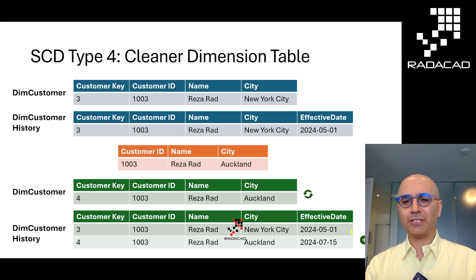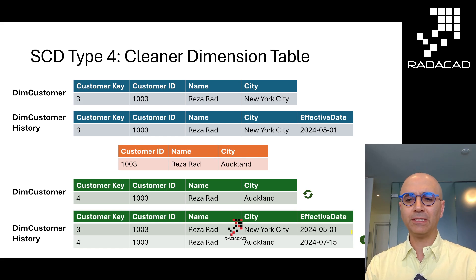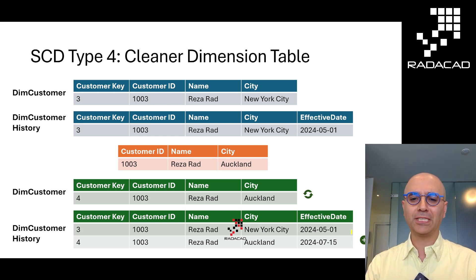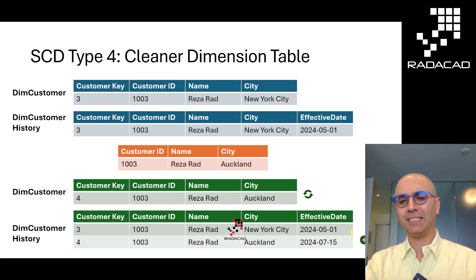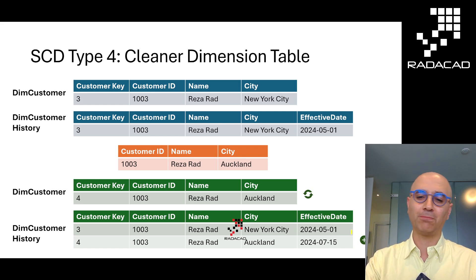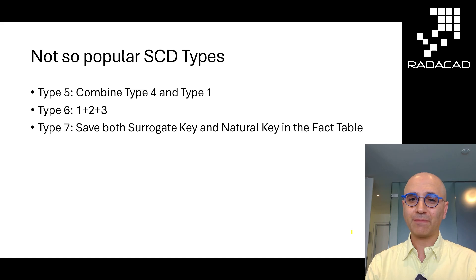When a change happens, the customer dimension table gets updated with the most up-to-date value, but the history table gets both updated and a new record inserted. If using just an effective date, a new record is inserted; if using from and to date, the previous record may also get updated. The ETL process for Type 4 is even more complicated than Type 2, which is one reason it is not a very popular option.